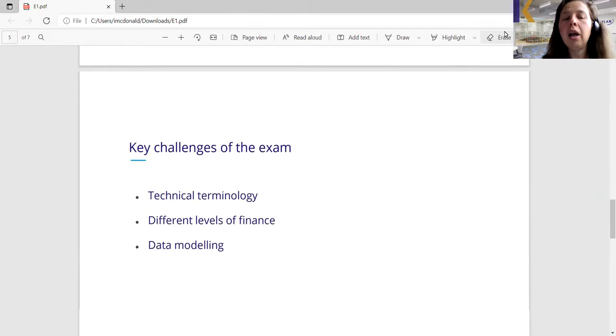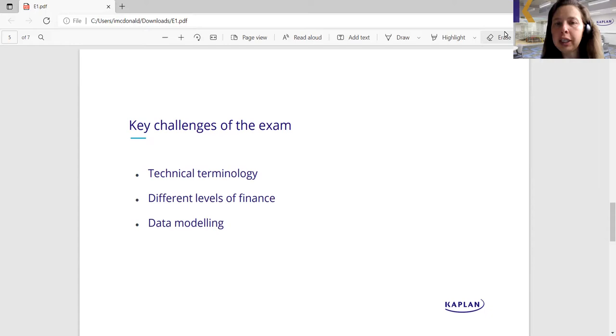Let's now think about challenges of this exam. In general, if you are starting at the operational level, I would strongly recommend you start with E1 because it is a lovely paper. It lays foundations for some of the other things you'll be doing at the operational level. For example, there are strong links with P1 helping you to understand why performance of the organization needs to be managed, and strong links with F1 where E1 is giving you the big picture of what's happening in the organization. Then F1 will explore the financial consequences of those decisions.